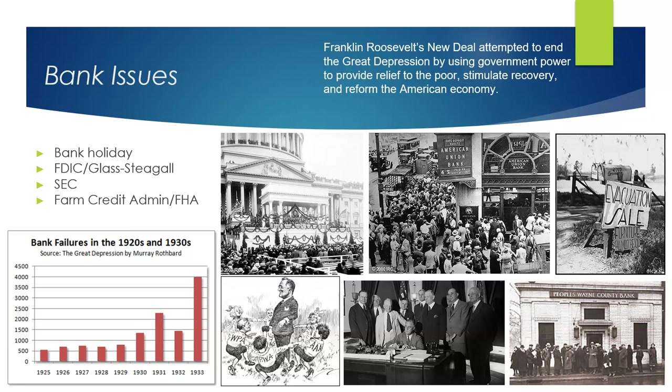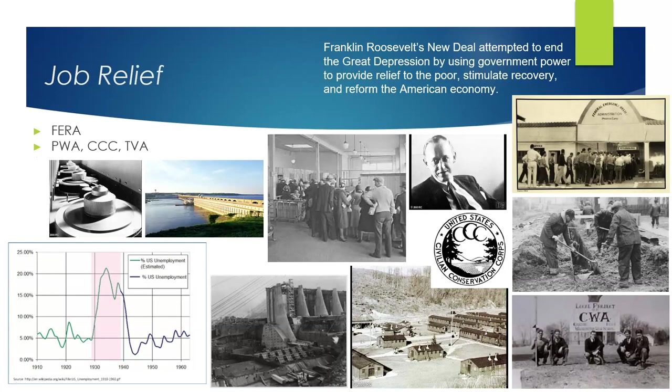The Farm Credit Administration and the Federal Housing Administration were created to encourage spending. The Farm Credit Administration provided low-interest loans to farmers, enabling them to meet their mortgage demands or to invest in essential equipment. The Federal Housing Administration insured mortgages, providing lenders with protection against losses if borrowers defaulted on their loans. This insurance encouraged lenders to offer more favorable terms to homebuyers, especially those with lower credit scores or smaller down payments, making homeownership more accessible to a broader population.